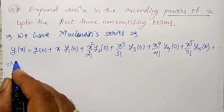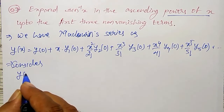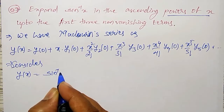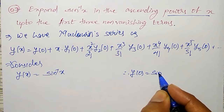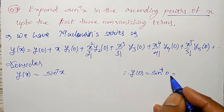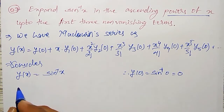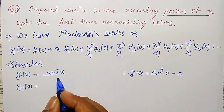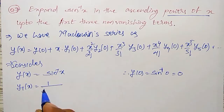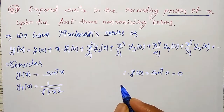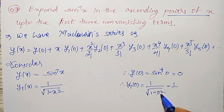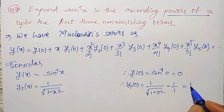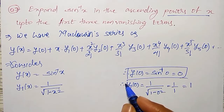Let y(x) = sin⁻¹(x). First, y(0) = sin⁻¹(0) = 0. For y₁, the first derivative of sin⁻¹(x) is 1/√(1 − x²), so y₁(0) = 1/√1 = 1. So y(0) = 0 is vanishing, and y₁(0) = 1 is the first non-vanishing term.